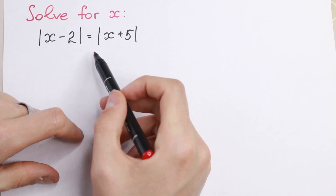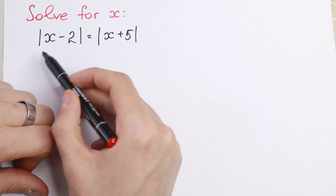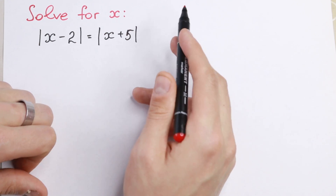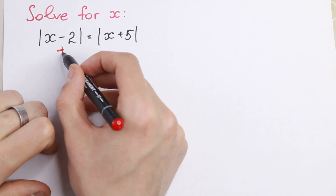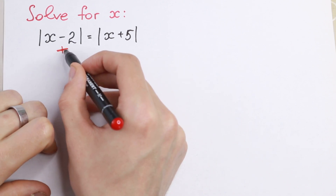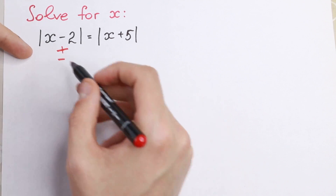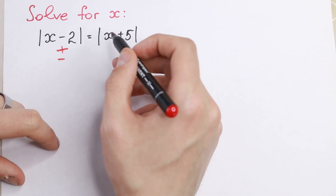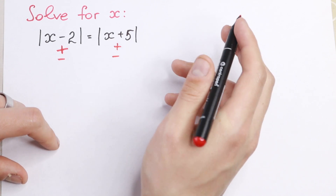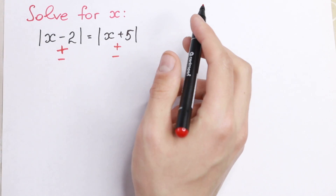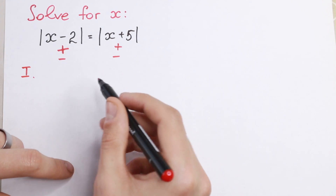Right here in this equation we have two absolute values — this expression in absolute value brackets, and this one in absolute value brackets. You need to write plus or minus for each one. If you don't know the sign of this absolute value on the left-hand side, it can be positive or negative, and this one as well. So you just need to solve four cases, four real quick cases.